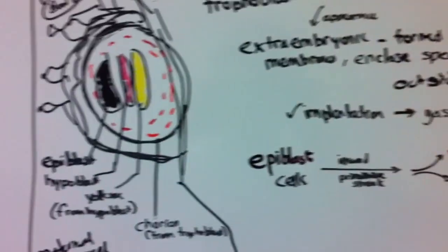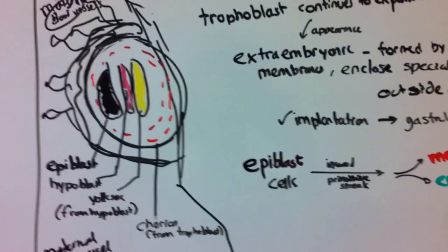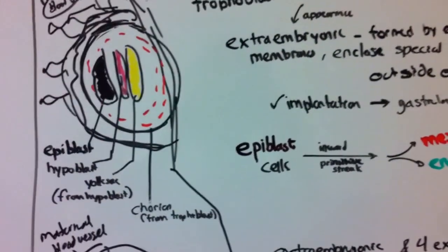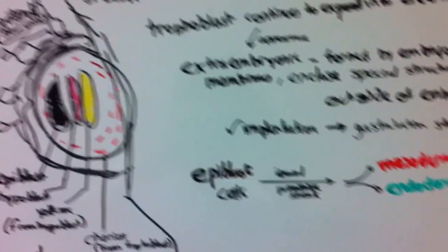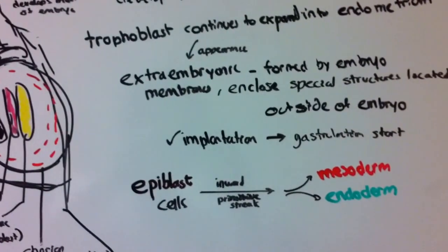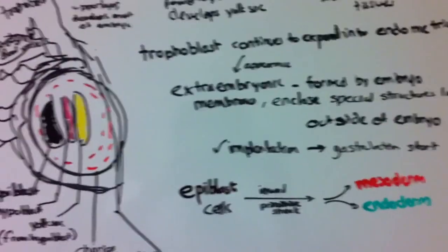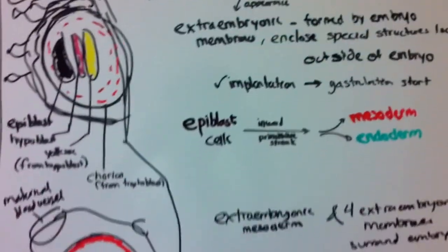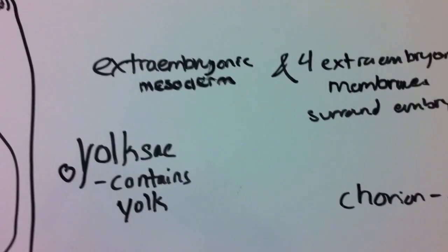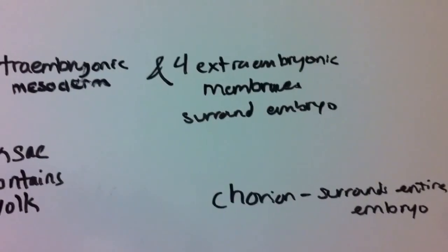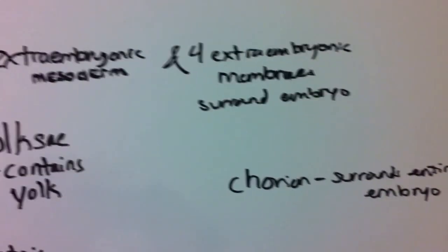Gastrulation is the inward movement of cells. In this case, the epiblast will start to move inward through the primitive streak to form the mesoderm and the endoderm. As we finalize our process, we have the extraembryonic mesoderm and the four extraembryonic membranes surrounding the embryo.